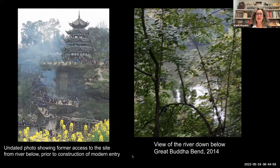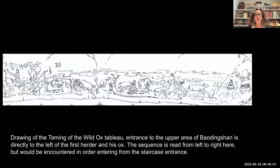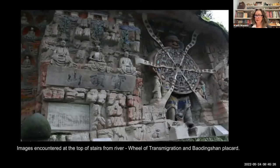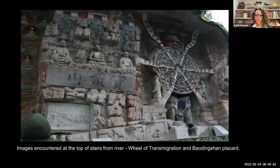There is now a modern entryway. I argue that the monastic community would have been coming in from above, from the top. So you have these two different ways of thinking about access to the site, and that access affecting how people engage with the site. The lay public coming up from the river would, when they entered the site, basically encounter the name of the site and then the wheel of transmigration.